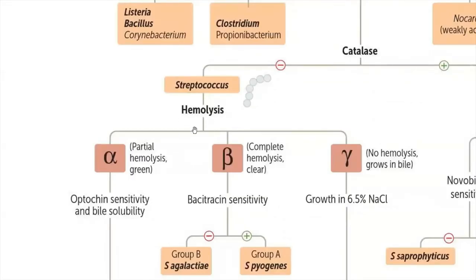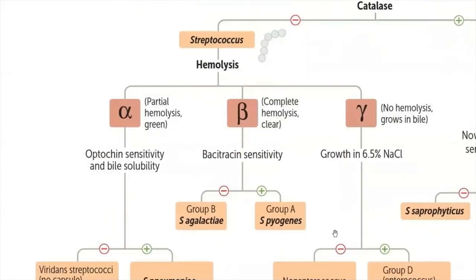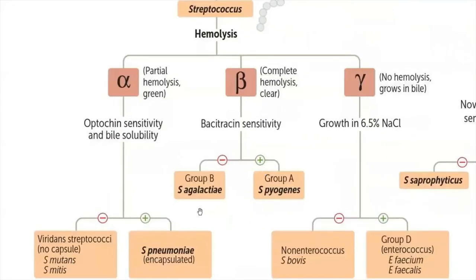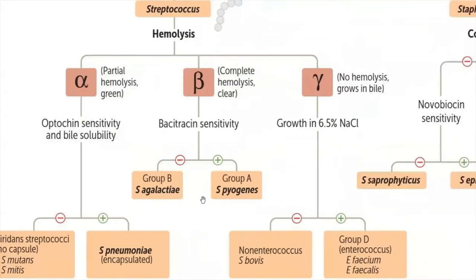If the organism is catalase-negative, we consider Streptococcus. The next step is to check the hemolytic pattern of the colonies on blood agar. Based on the hemolytic pattern, we choose the next biochemical test. If the organism is beta-hemolytic, we consider Group A and Group B strep — Group A is Strep pyogenes, Group B is Strep agalactiae.